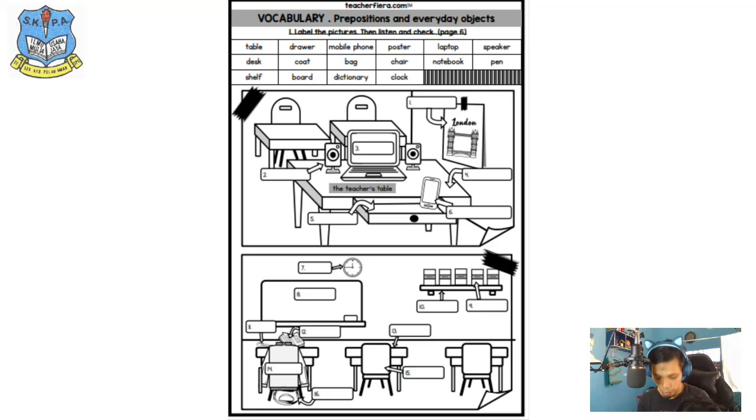Number 11, it is a pen. Number 12, it is notebook. And that is the answer for number 12. And then we have number 13, we have a table, a desk.